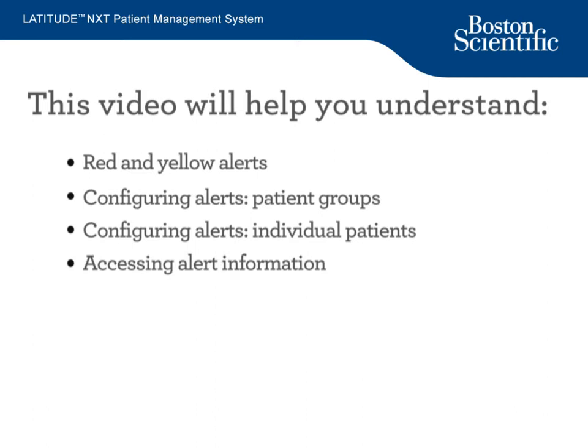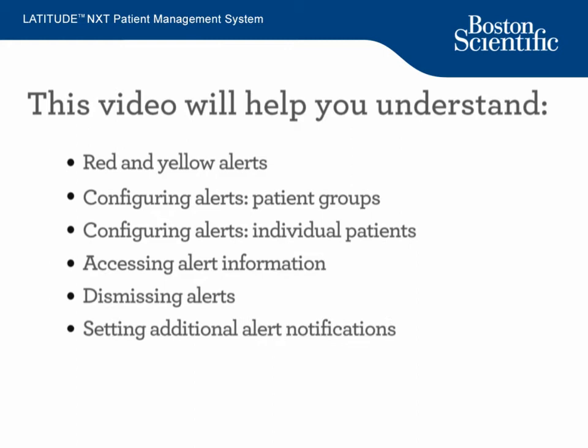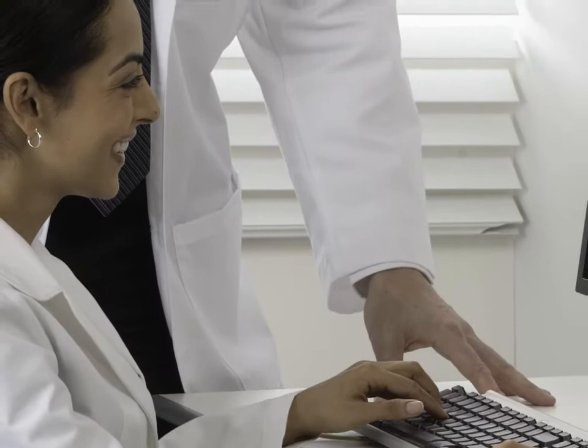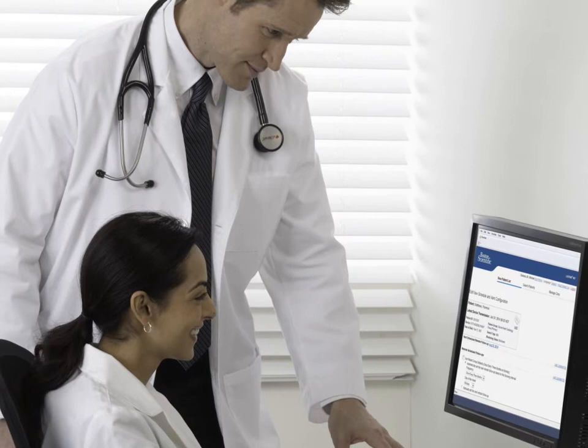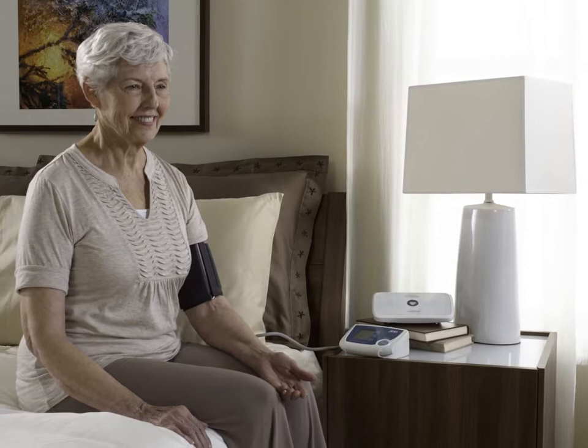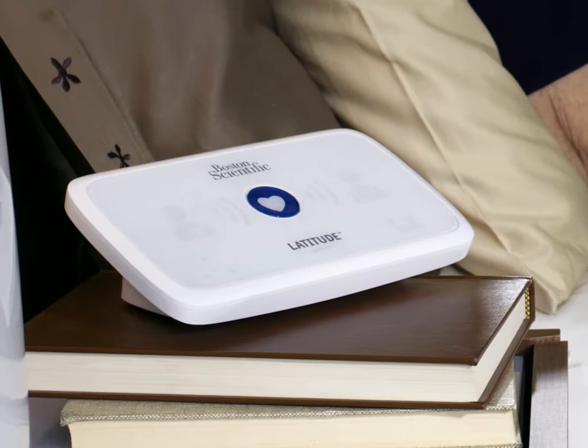We'll start by covering the basics of red and yellow alerts in Latitude Next. Alert monitoring provides additional device and patient health status monitoring between scheduled follow-ups, which is designed to help you see changes sooner. In addition, Latitude Next conveniently allows you to configure your alerts without bringing your patients into the clinic. Alert notifications are generated for a number of conditions which vary depending on the implanted device model. There are two levels of alert conditions: red alerts and yellow alerts.